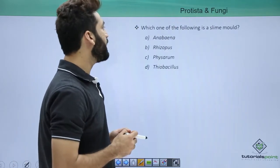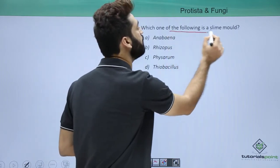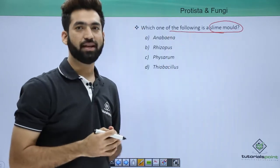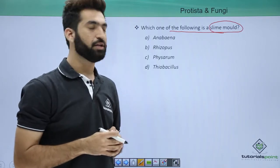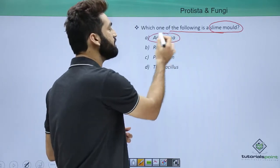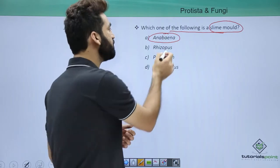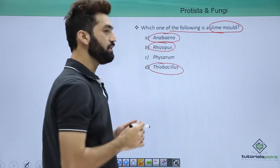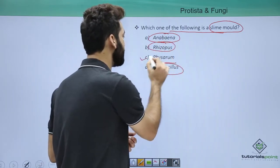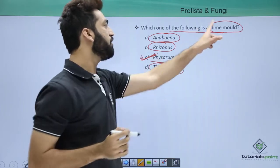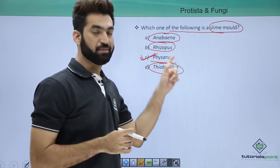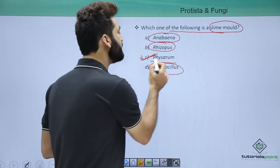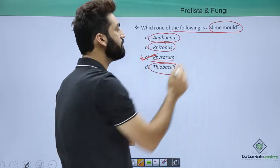The next question is: which one of the following is a slime mold? Anabaena is a cyanobacteria, Rhizopus is a fungus, Thiobacillus is a bacteria — so what is left is Physarum. Physarum is a very important name; it is a slime mold. This question has been asked 2-3 times in exams, so remember: Physarum is a slime mold.